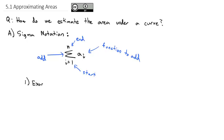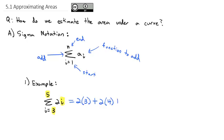For example, the sum as i goes from 3 to 5 of 2i means the variable i is replaced with everything counting from 3 up to 5 — that is, 3, 4, and 5. So we start at the bottom: 2 times 3, plus 2 times 4, plus 2 times 5. Putting that in the calculator, 2×3 + 2×4 + 2×5 gives us a sum of 24.